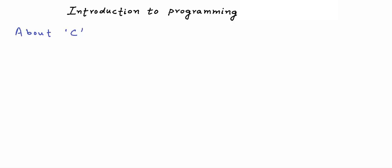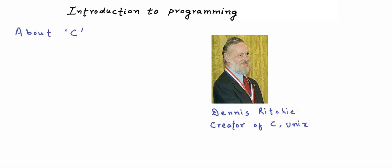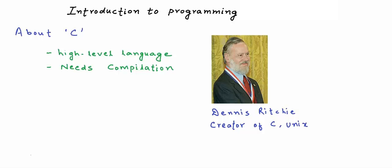C was developed around the year 1970 by a great computer scientist named Dennis Ritchie. Dennis Ritchie is also the creator of the Unix operating system — in fact, the Unix operating system was written in C. C is a high level language and it needs compilation. C is still a very famous programming language, and most of the other famous programming languages like C++, Java, and C# derive their basic constructs from C. So if you know the syntax of C, it's really easy to pick up these other languages, at least for the basics. And C gives you a lot of low-level control on the machine — some people say that C is somewhere in between a low level language and a high level language. Working with C will give you a lot of insight into computer architecture.